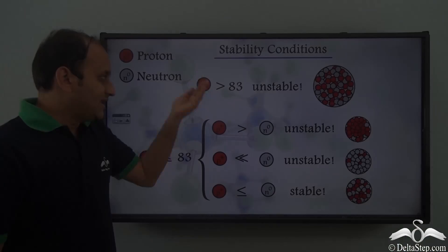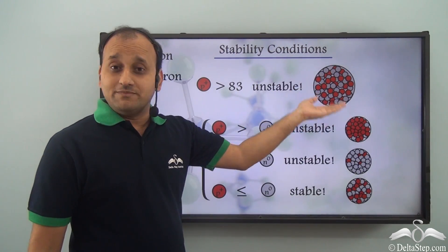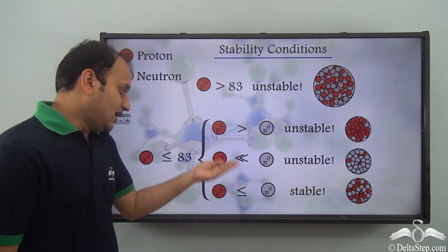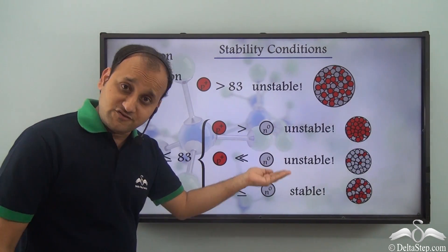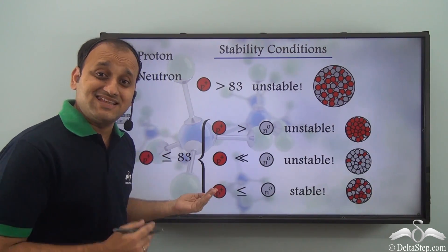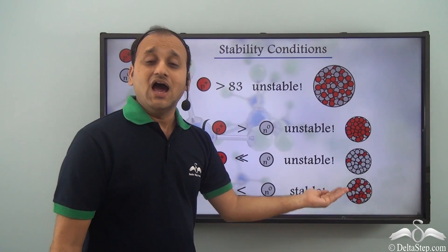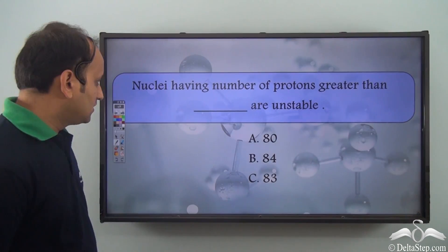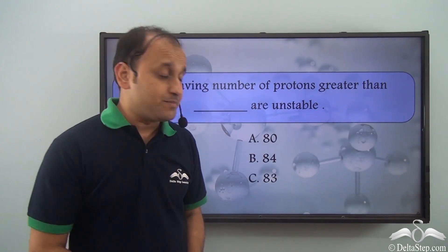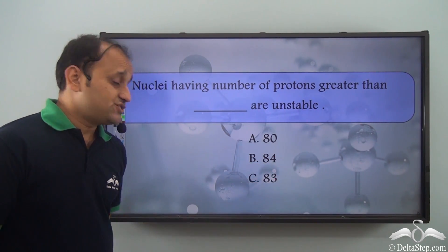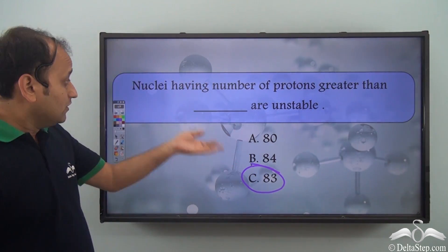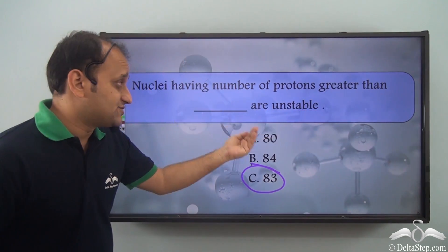So to summarize: when the number of protons is larger than 83, the nucleus will be unstable. If the number of protons is larger than the number of neutrons, the nucleus will be unstable. If the number of protons is very much less than the number of neutrons, again the nucleus will be unstable. And if the number of protons is somewhat less than or equal to the number of neutrons, we will see a stable nucleus. So can you answer this question? Nuclei having a number of protons greater than what are unstable — is it 80, 84, or 83? The right answer is 83.